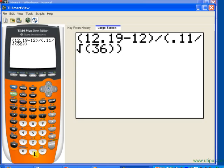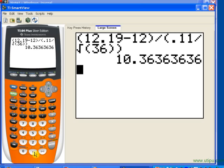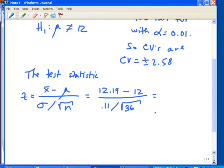So, we close the radicand and then close the denominator. And so, it looks like our test statistic is rounded to two decimal places, 10.36. So, let's go ahead and record that now.